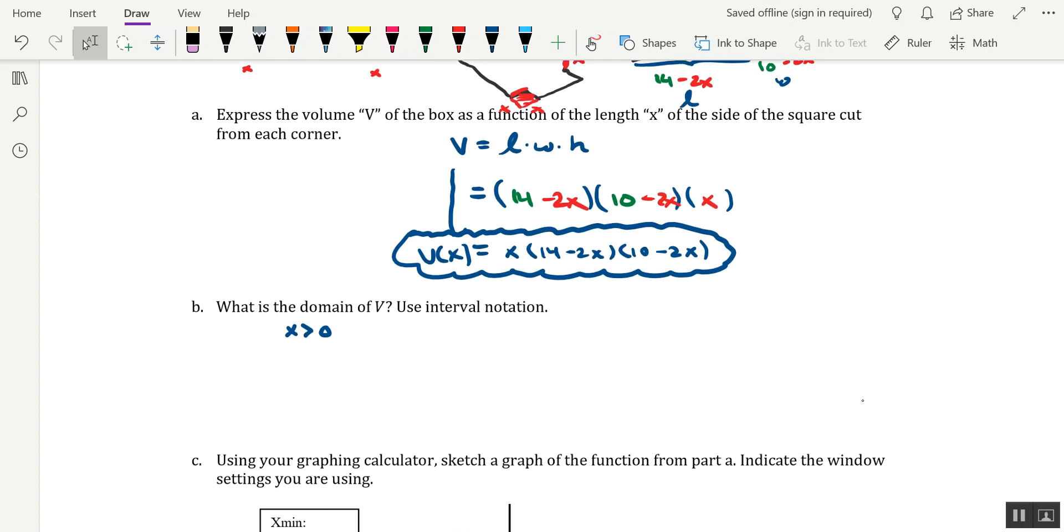So with that said, not only does x have to be greater than 0, we also need 14 minus 2x to be greater than 0, as well as 10 minus 2x to be greater than 0. And what I'd like to do is solve all three of these inequalities and see what it offers us in terms of values for x that are legitimate to the problem. So the first inequality is already solved for x is greater than 0.